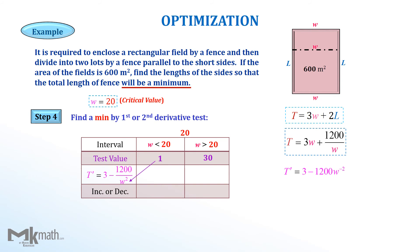Now, substituting the test value 1 into the derivative to get the sign as negative. Substituting another test value, 30, into the derivative to get the sign of positive for the second interval. For the first interval, since the sign of the derivative is negative, the function is decreasing. For the second interval, the function is increasing because of positive derivative.